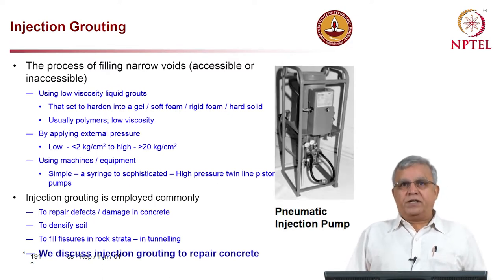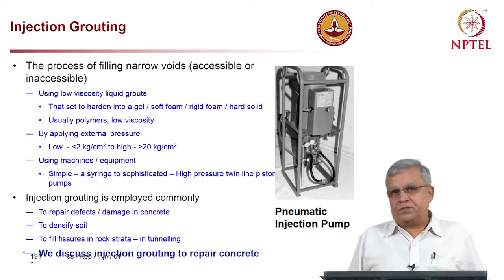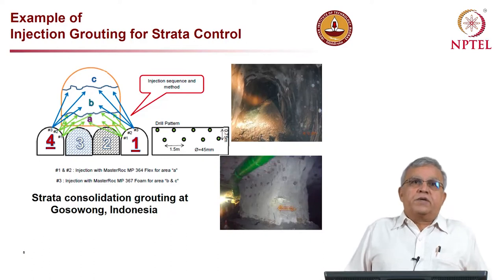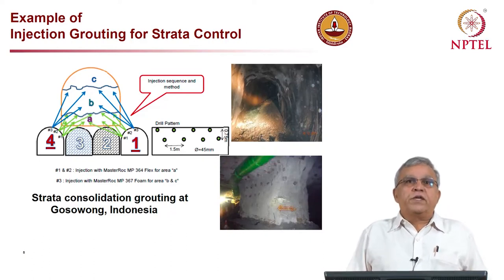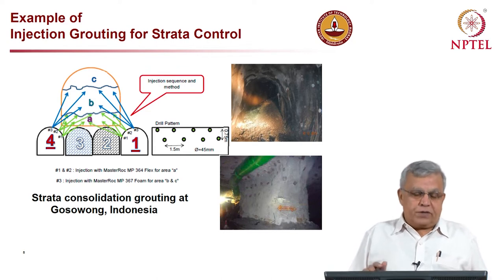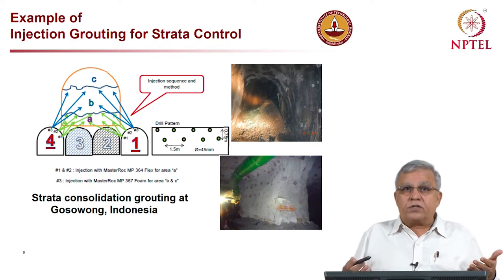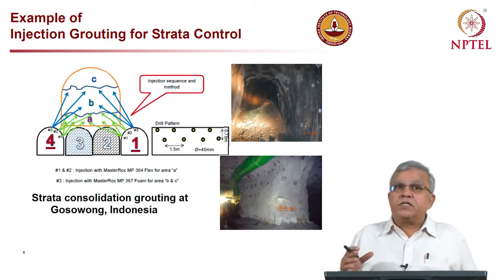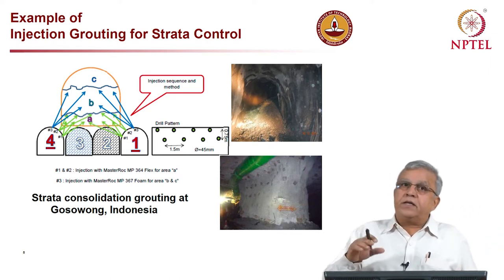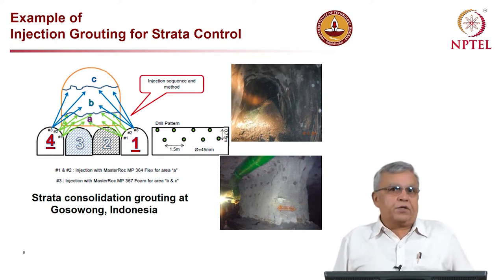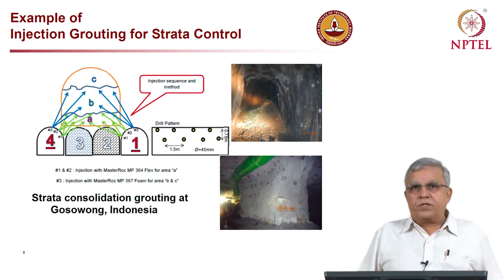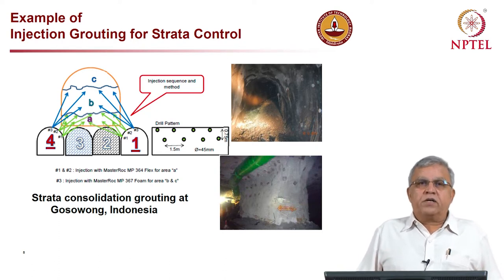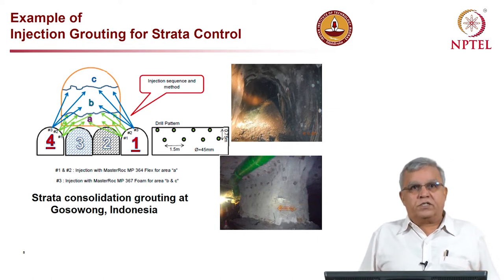One example of injection equipment is a pneumatic injection pump. In rock strata control, different densities of foam are filled at different areas of rock strata. In one tunnel project, collapse occurred causing rock and muck to fall. Injection grouting was done to hold the strata together so no further damage would occur.